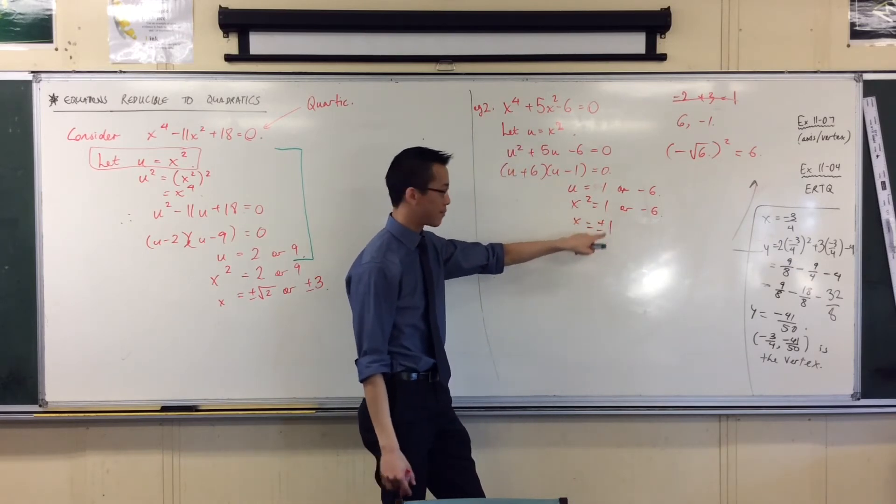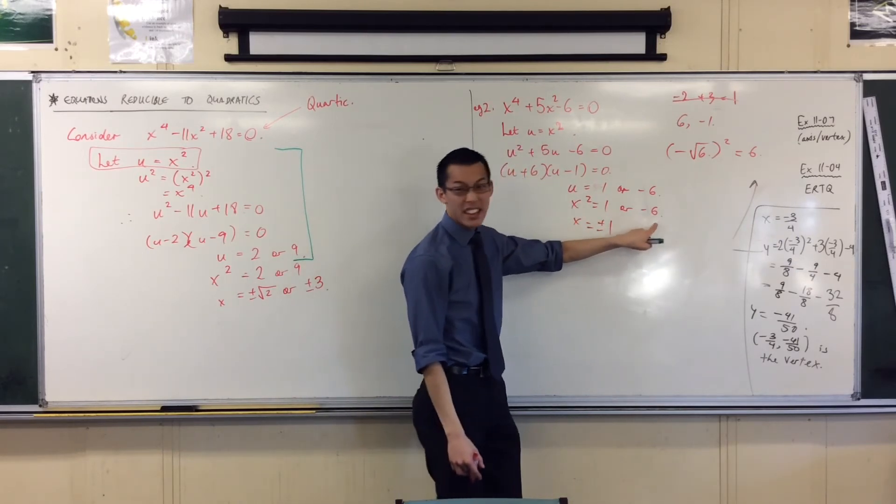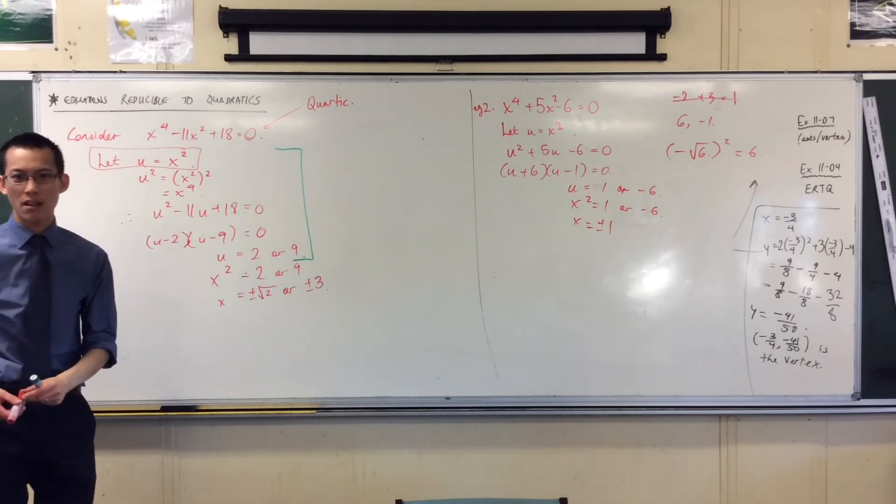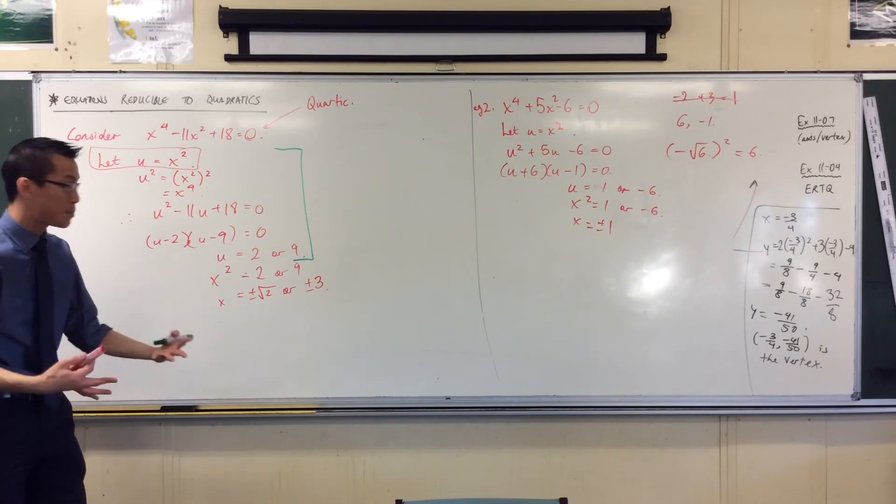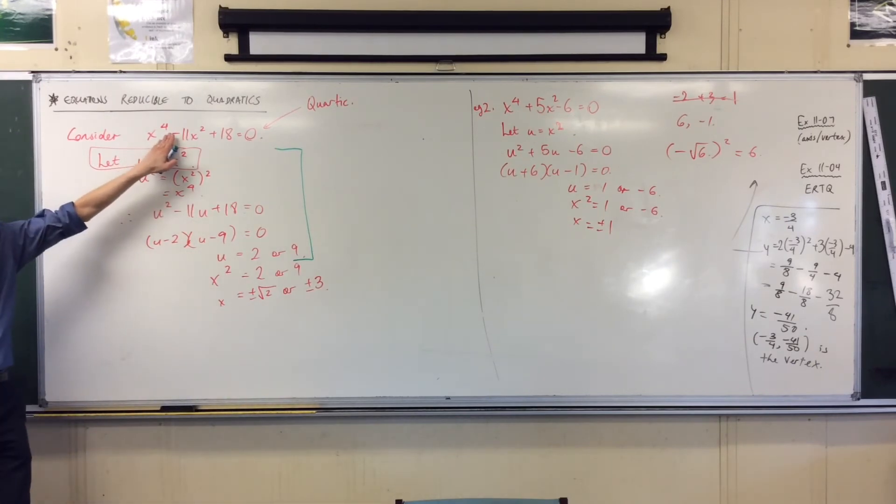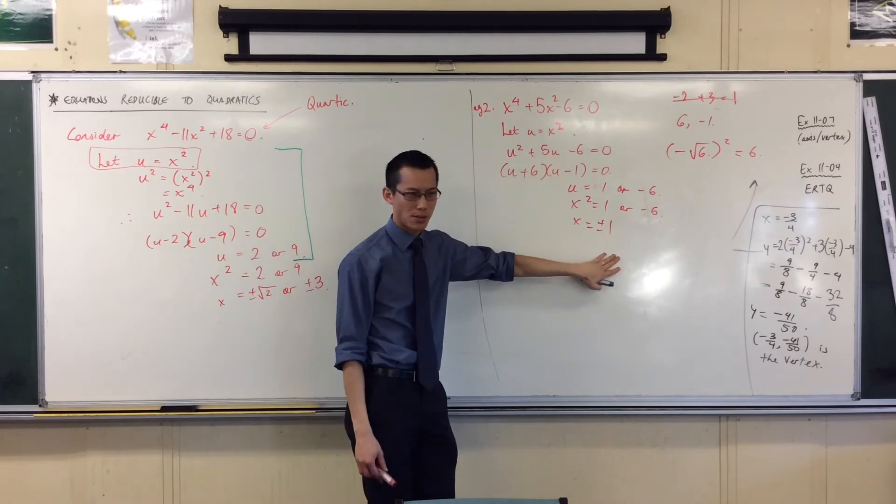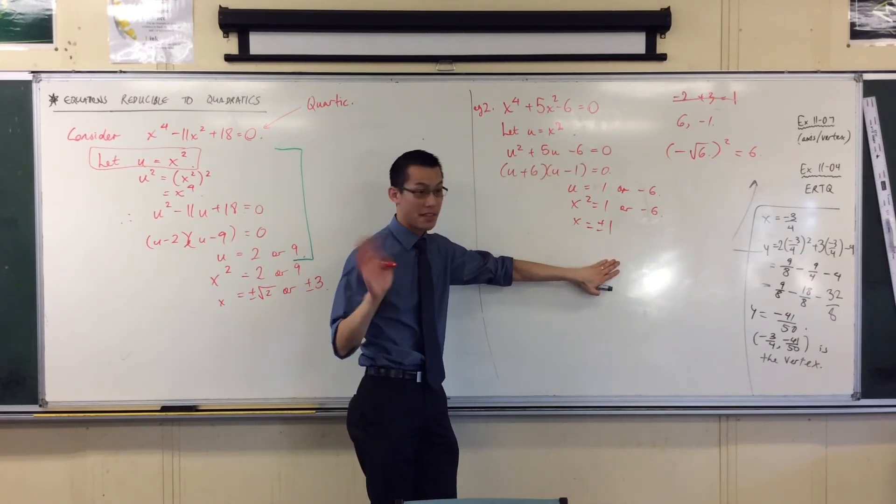So therefore, out of the 1, we get plus or minus 1. Out of the negative 6, though, it doesn't actually contribute any solutions. That's it. I'm finished. Even though we expected, and it's with good reason, we expected 4 solutions, we've only gotten 2, and that does happen sometimes. That's fine.